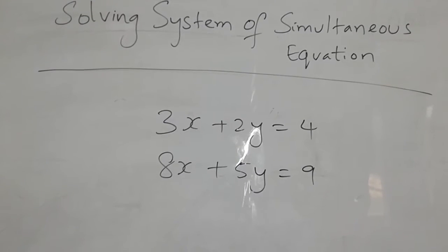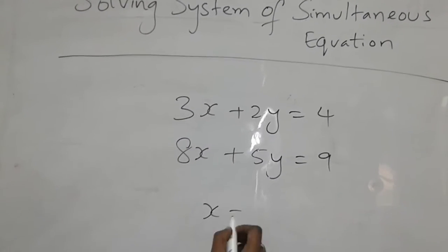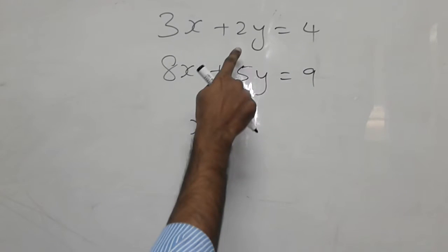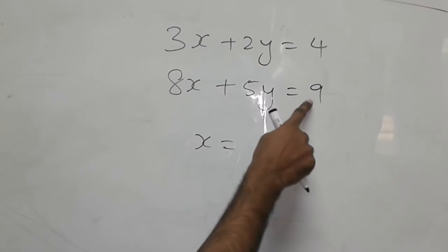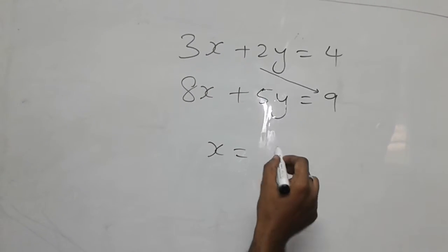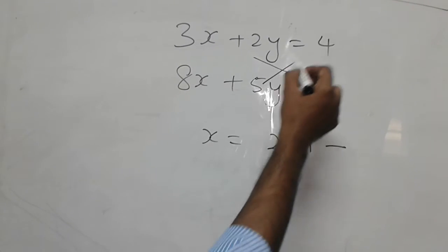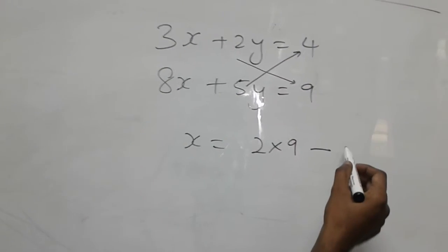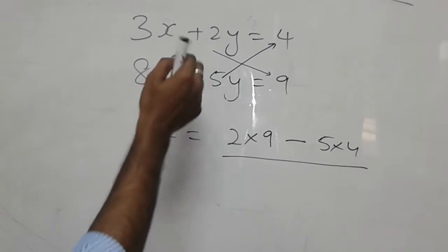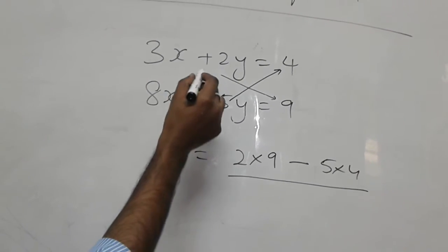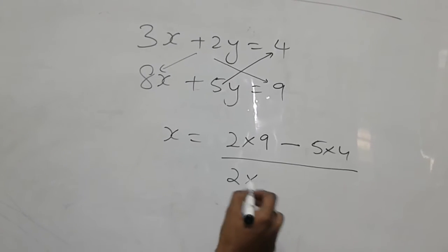The x coefficient, y, as well as the constant number should be after the equality symbol. Now to get x, the quickest way to find x and y is to multiply the coefficient with the constant of the second equation, that is 2 times 9, minus the same coefficient of y with the constant of the first equation, 5 times 4, divided by coefficient of x and y.